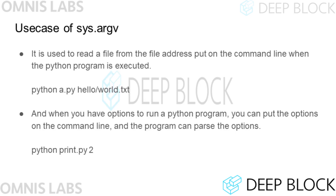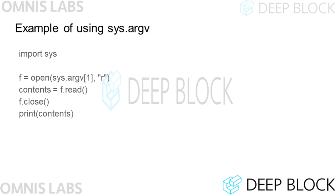sys.argv is used to read a file from the file address entered in the command when the Python program is executed. For example, if you want to access world.txt in a folder called hello from a program called a.py, run the Python program as shown in the slide. argv can also be used to set any option value when executing the program. For example, if the print.py program runs as many times as the number entered in argv, entering 2 after the file name lets the program check the value in sys.argv. This program reads the world.txt file in the hello folder, prints it out on the screen, and ends.